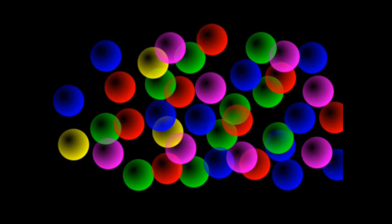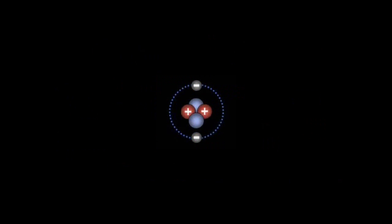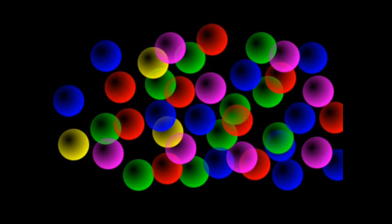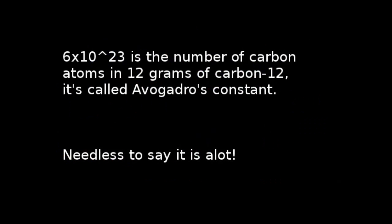However, even the slightest complication makes the system analytically unsolvable. Even two electrons going around a proton has no known solution, so approximation methods are used, such as perturbation theory. With this in mind, how then do we model the ridiculously large number of particles found in any real system? For example, 18 milliliters of water has 6 times 10 to the 23 water molecules, an impossible system to solve from its equations of motion.